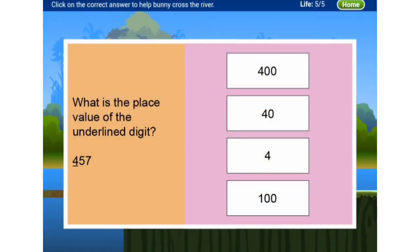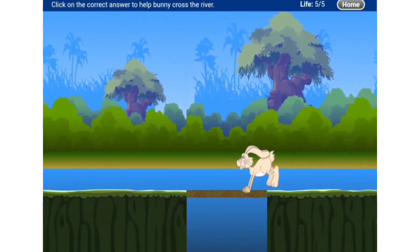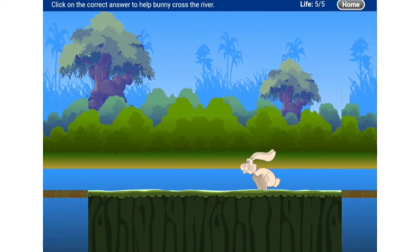Now: what is the place value of the underlined digit? The number is four hundred fifty-seven, and the underlined digit is 4. Is it in tens? No — it is in hundreds. Hundreds means the value is four hundred, which is 400. The rabbit crossed the bridge again.